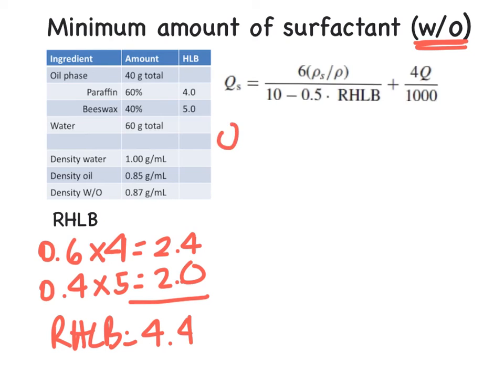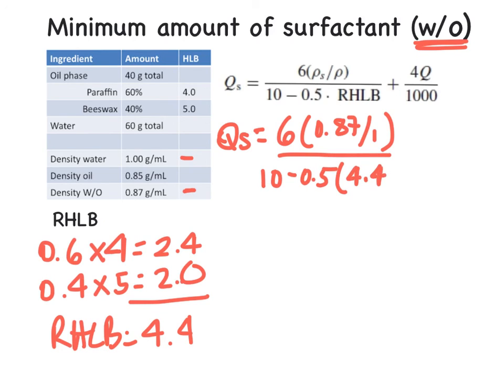Now we're ready to plug everything in. So again, our QS is going to be equal to 6 times the density of our combination, the 0.87, divided by our dispersed phase. This time we're going to use the water, divided by 10 minus 0.5 times our RHLB, plus 4 times our continuous phase. This time it's the oil. So percentage is 40, divided by 1,000.